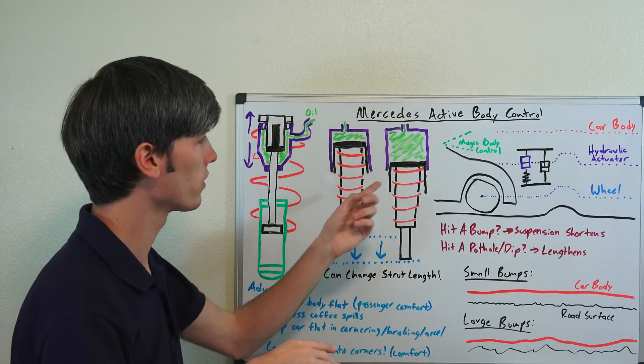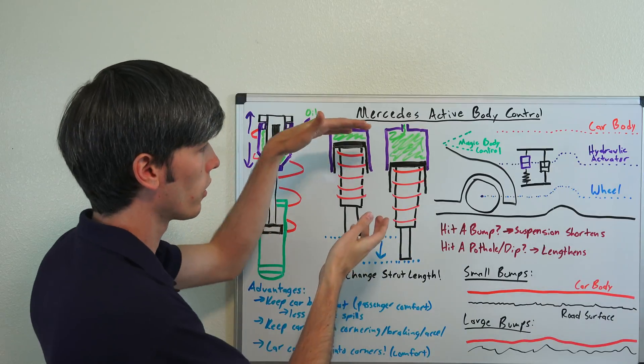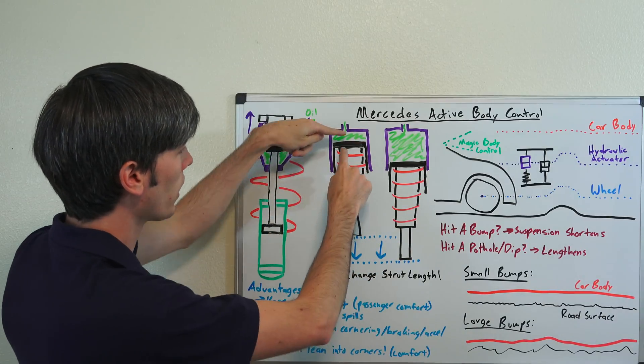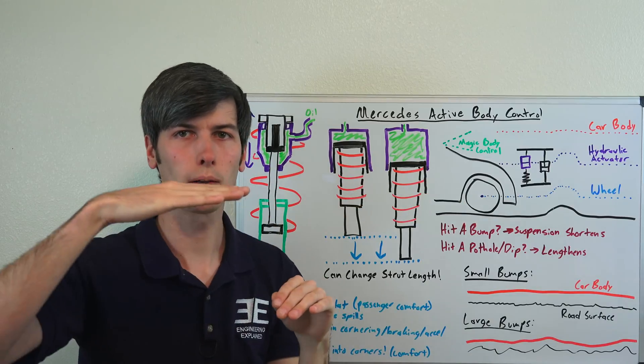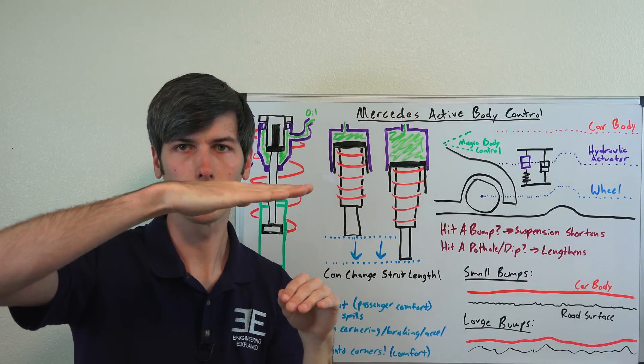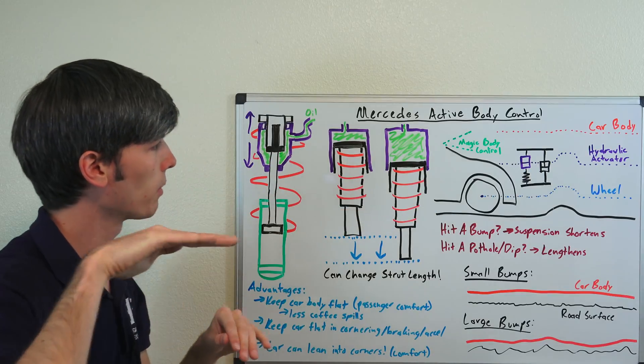The other thing it does is it can keep the body really flat in cornering or when you accelerate. Usually you're going to have that car lean back, but you can have it compensate for that and push it back so that even though your springs are going to compress, you can have this extend and keep the body flat as you accelerate or as you brake.